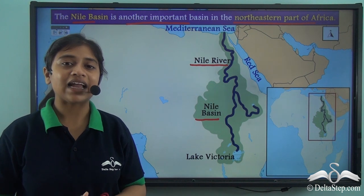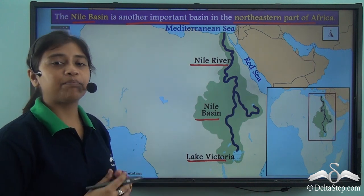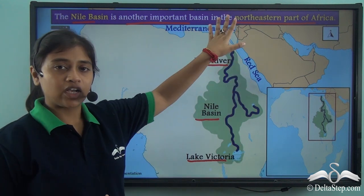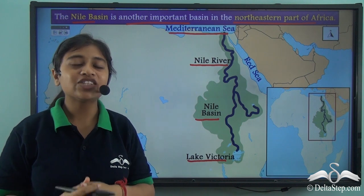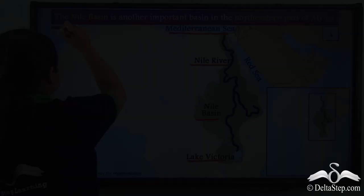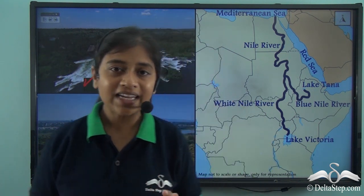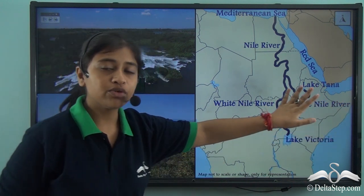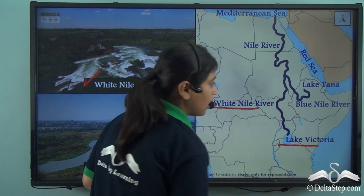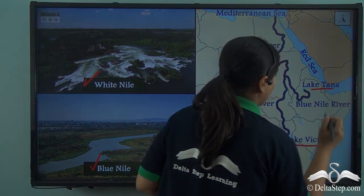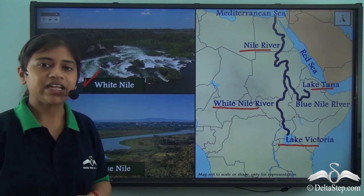The Nile River originates in Lake Victoria, passes over the northeastern part of the continent, and finally drains into the Mediterranean Sea. River Nile has two major tributaries: the White Nile and the Blue Nile. The White Nile originates in Lake Victoria while the Blue Nile originates in Lake Tana. These two tributaries together form River Nile that drains into the Mediterranean Sea.